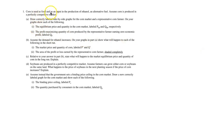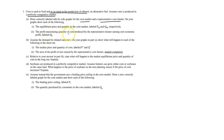The question says: corn is used as food and as an input in the production of ethanol, an alternative fuel. Assume corn is produced in a perfectly competitive market. Part A says: draw a correctly labeled side-by-side graph for the corn market and a representative corn farmer, showing equilibrium price and quantity, profit-maximizing quantity QF, earning zero economic profit.